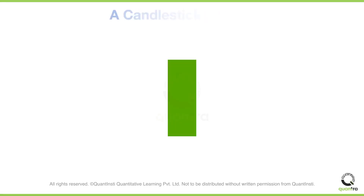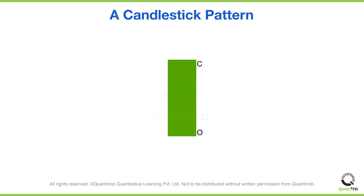On your screen right now there is one candlestick. It's a green candlestick. Just to refresh your memory, this becomes the open, this becomes the close. And since there are no wicks over here, the open also becomes the low of the day, and the close also becomes the high of the day.